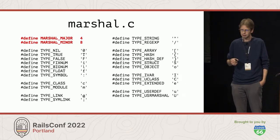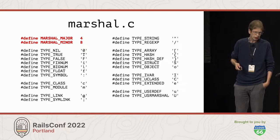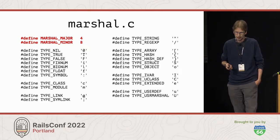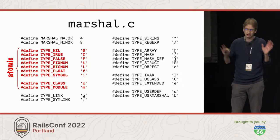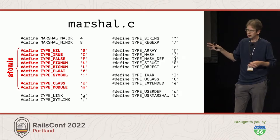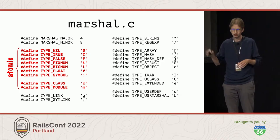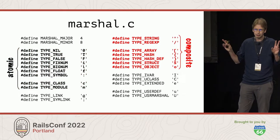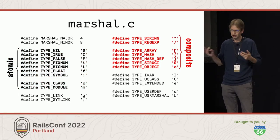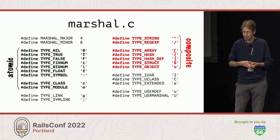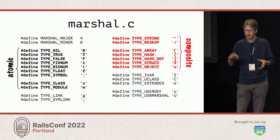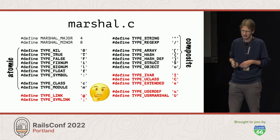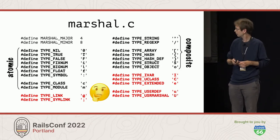There's a bunch of constants at the top of marshal.c in MRI Ruby which tell you what it's basically doing. It has a major and minor version — 4.8 — not related to the Ruby version; this hasn't changed for years. Then there's a bunch of things I refer to as "atomic" — stuff that cannot contain other objects inside: nil, true/false, numbers, floats, symbols, and also classes and modules. Then there are "composite" things: arrays, hash, hash with a default value (hash_def), objects, and also things you might not expect that can have objects inside them like strings and regexes. And there's also a lot of mysterious stuff I didn't know about until I prepared for this talk.